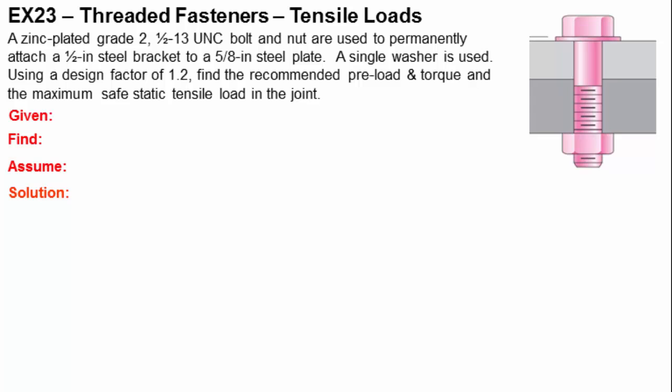Using a design factor of 1.2, find the recommended preload and torque and the maximum safe static tensile load in the joint. We're going to start out, as with all problems, by identifying the variables that are given to us. We know that we have a grade 2 bolt. We are using zinc coating on the bolt.